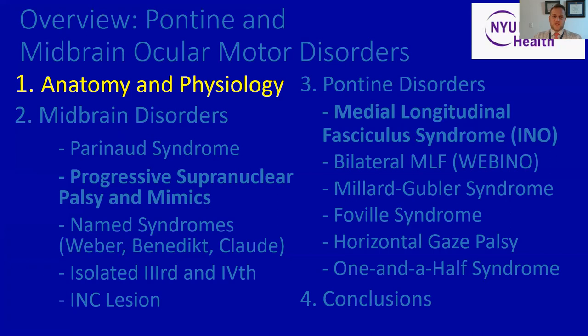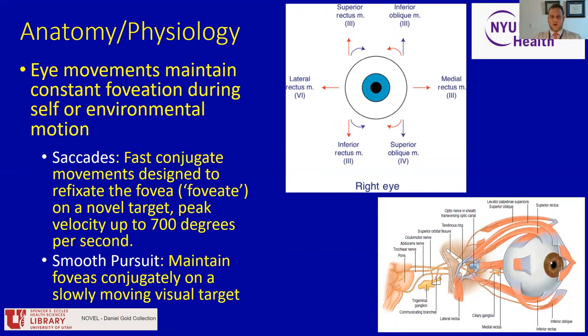Many of us know that eye movements are an essential aspect of the way that we experience the world because they bring our object of regard onto our point of greatest visual acuity on our retina, which is our fovea. Eye movements serve a very important purpose by allowing us to focus on an object. We use two major classes of eye movements: saccades, which are fast conjugate eye movements that refixate the fovea on a target and are some of the fastest movements propagated by the human body — up to 700 degrees of movement per second — and smooth pursuit, in which the eyes slowly track an object as it moves in space, maintaining conjugate fixation on that object.